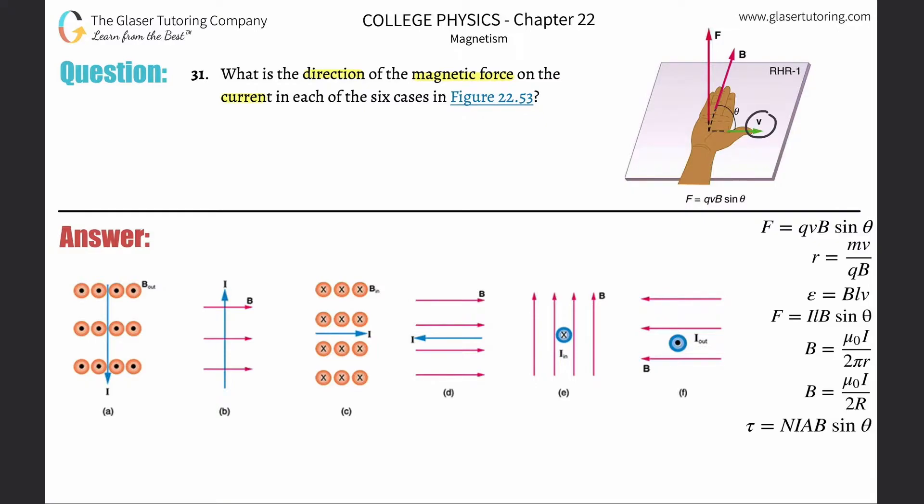Instead of your thumb representing the velocity, your thumb will now represent the current. That should make sense because current represents moving charge, so it's kind of like velocity anyway. The answers we should get here should be identical to number one, so we're just going to run through it because it's basically the same thing.